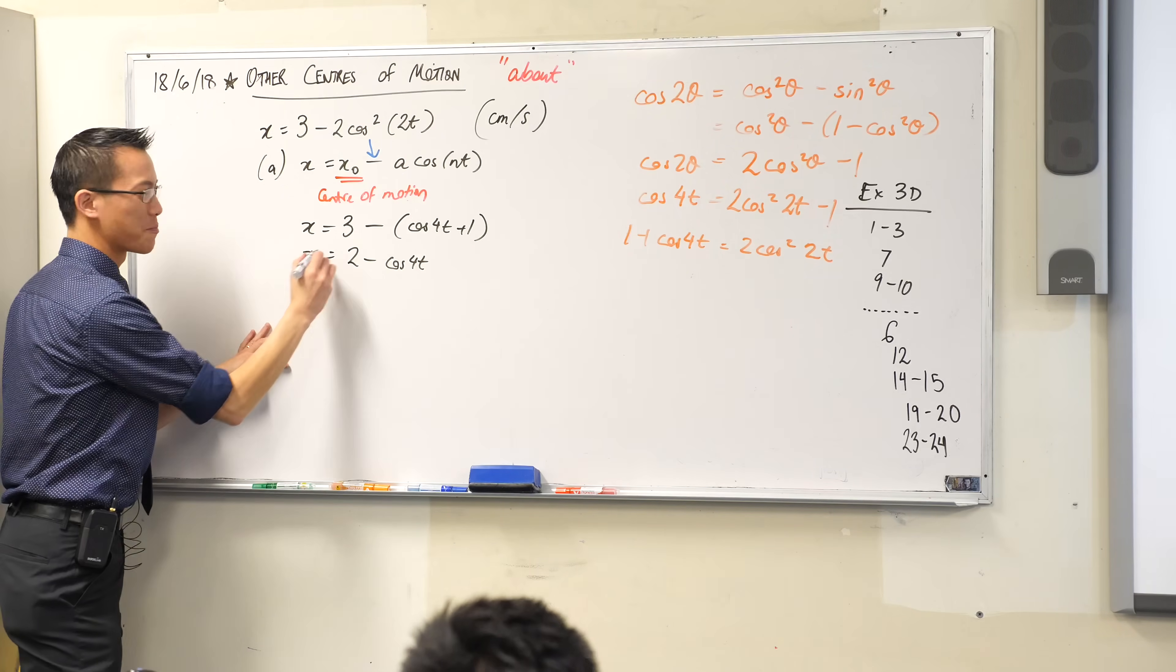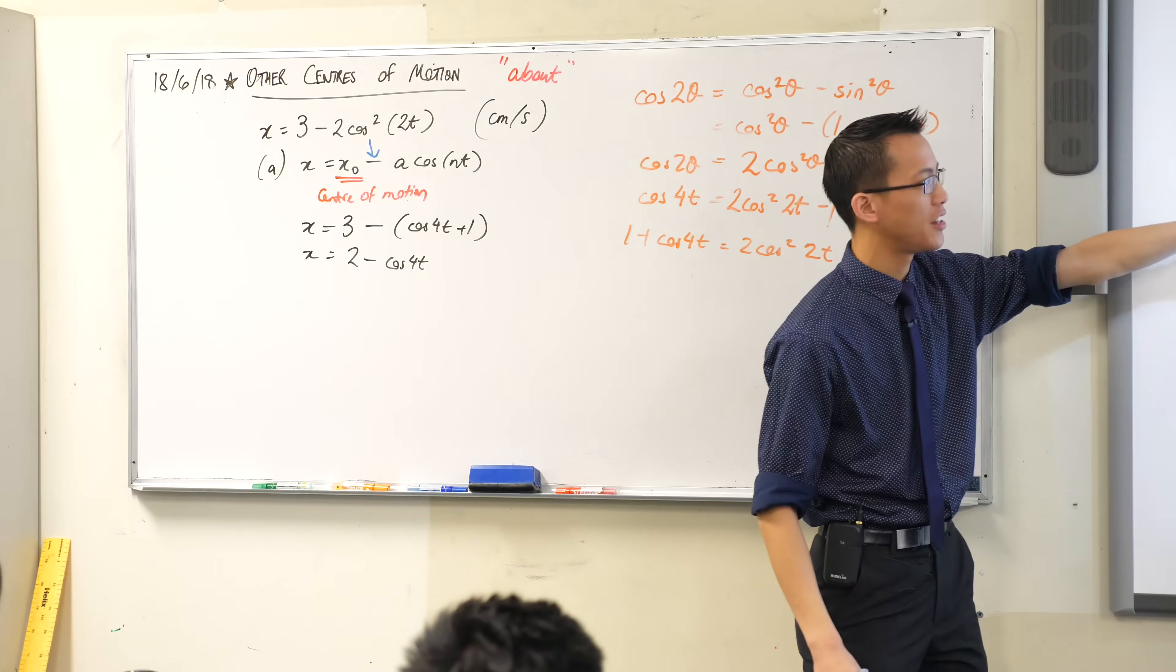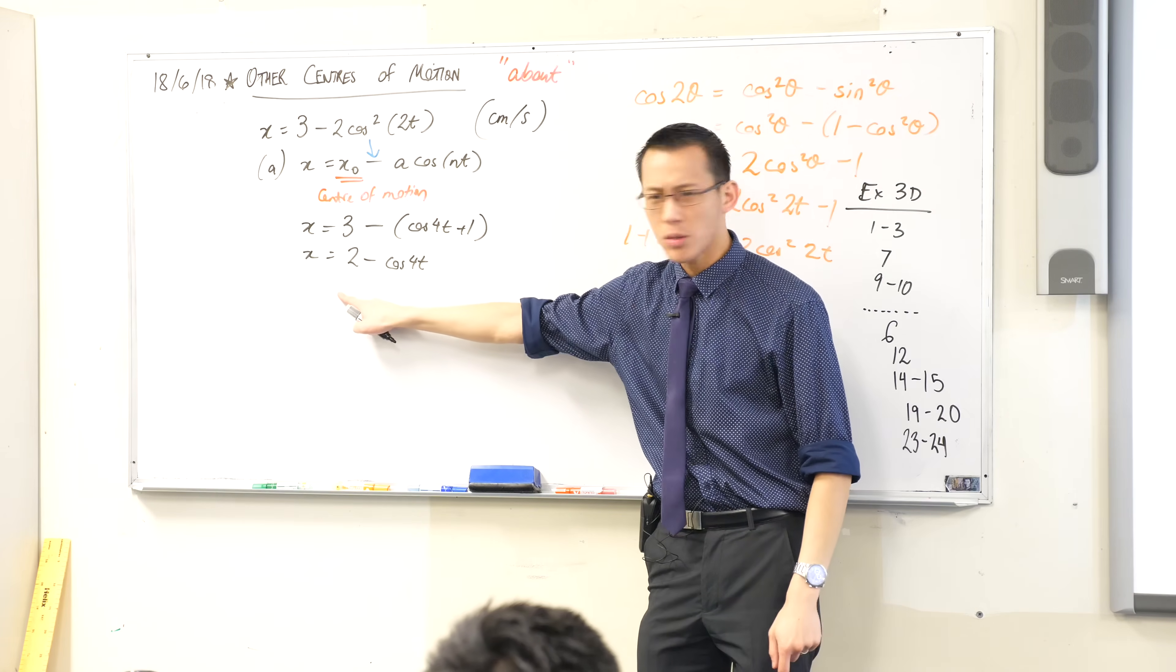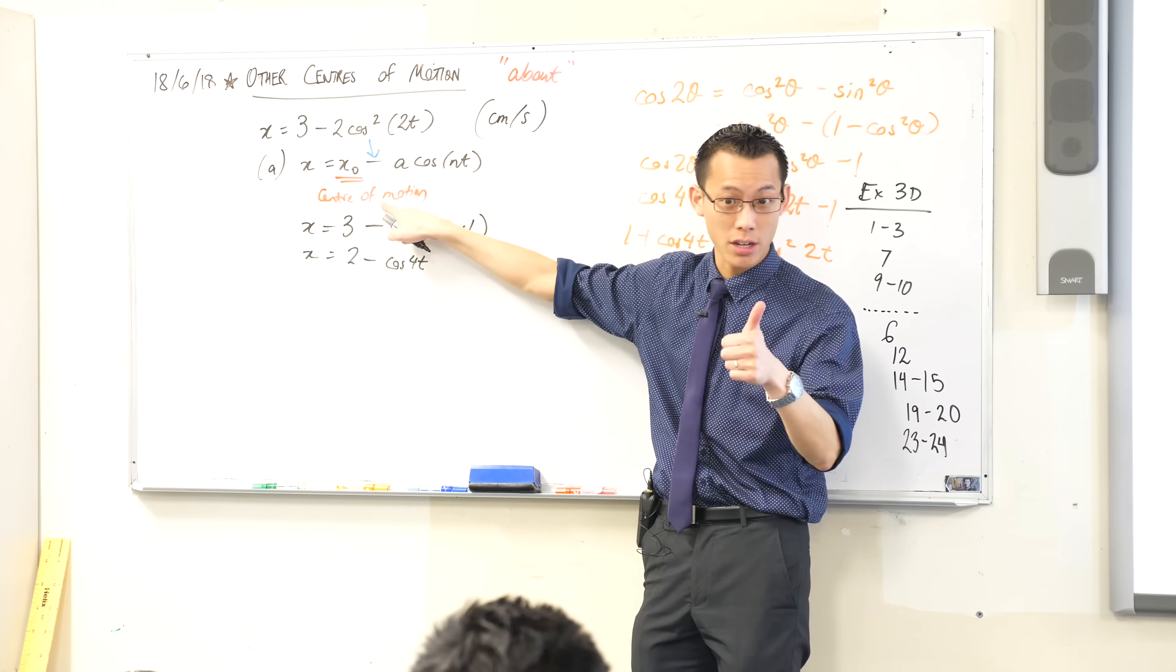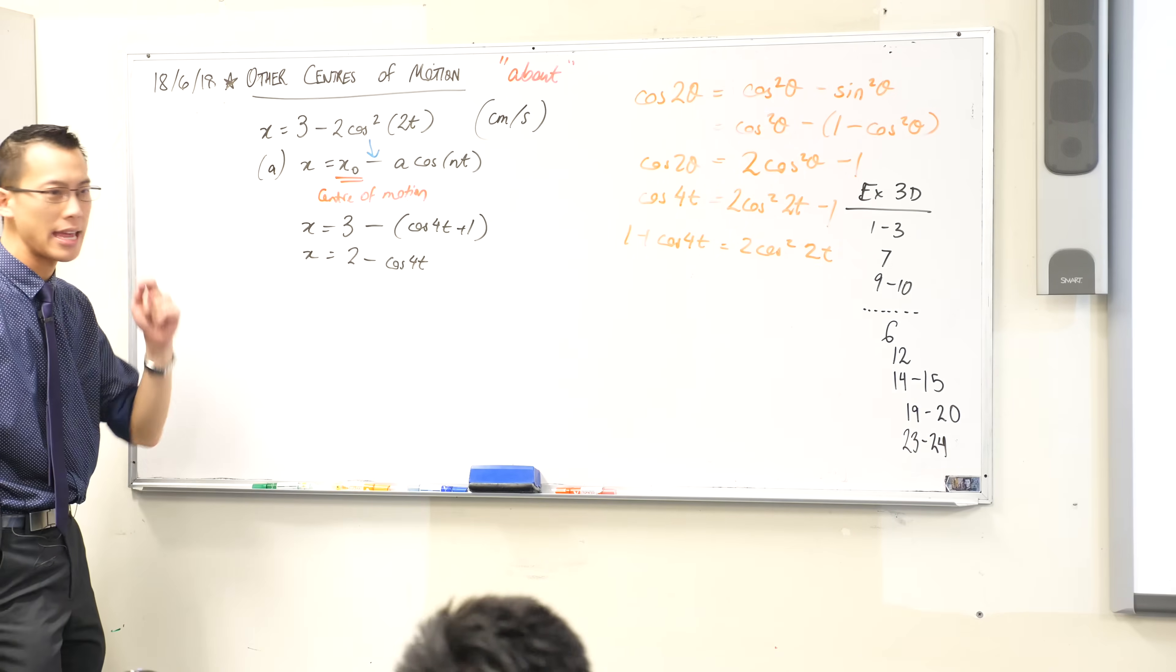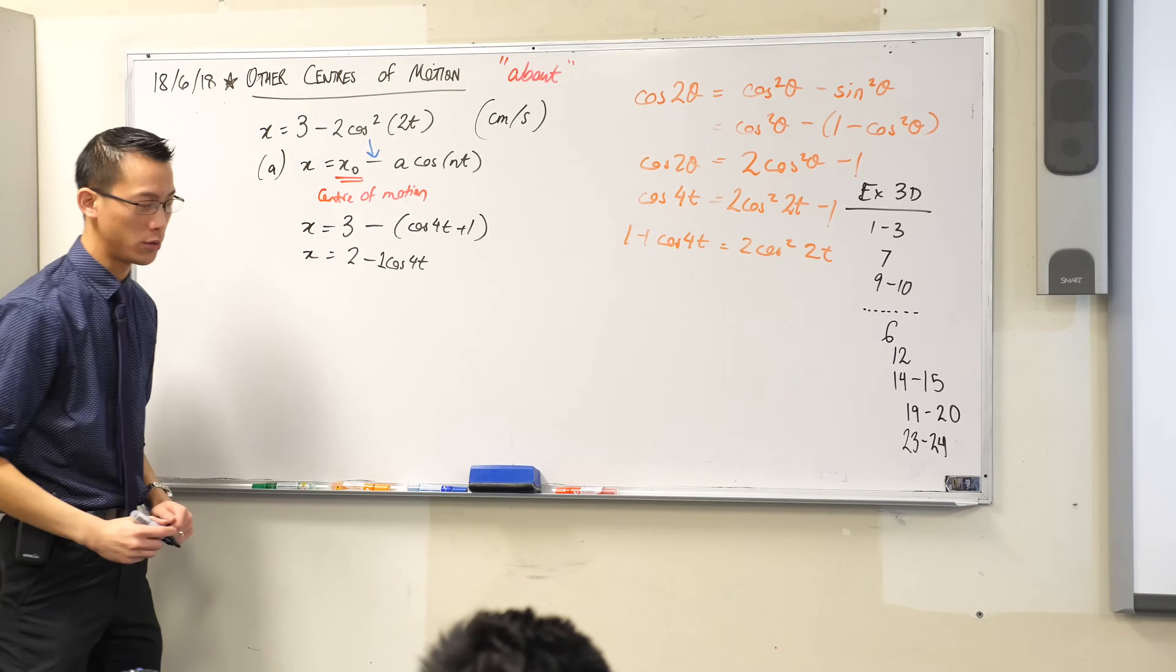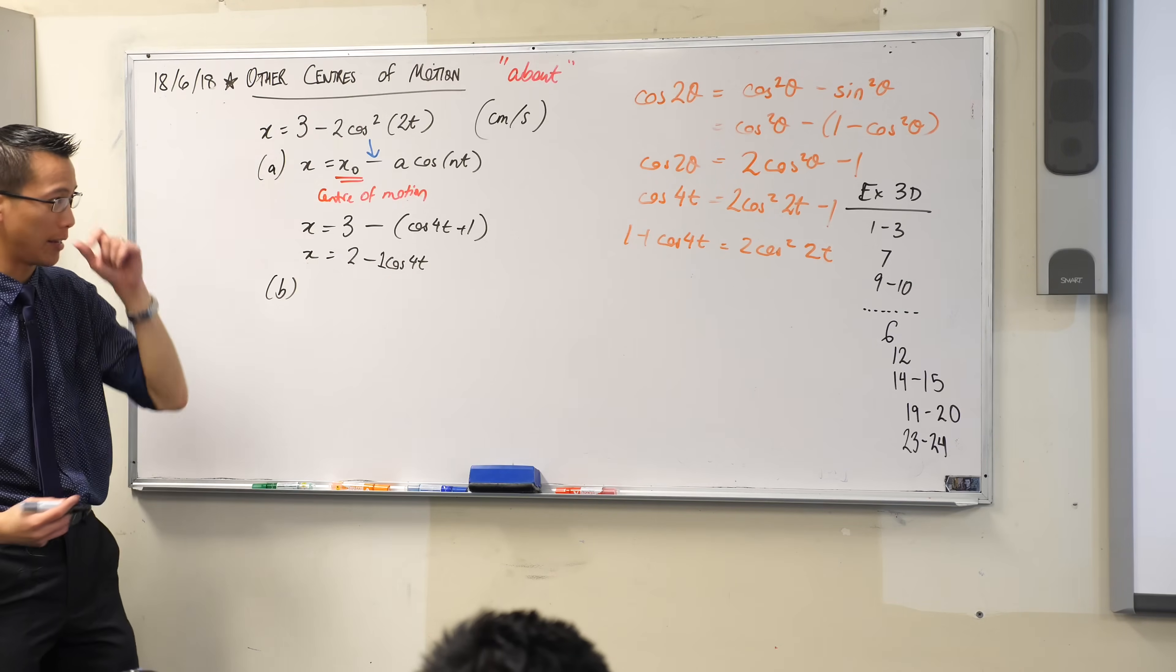Alright. So, what do I do with this? Well, we've just answered part a. We've put the equation in this form. x equals... There's x₀ right there. What did we say x₀ was? What's the significance of it? It's the center of motion. It's the center of motion. Very good. I'm going to use that in a second. And then you've got this. This is my a cos(nt). What's the a in this case? It's 1. 1. So, that's going to be useful in a minute as well. And there's our n. Alright, fantastic. Now we're ready to interpret this thing.